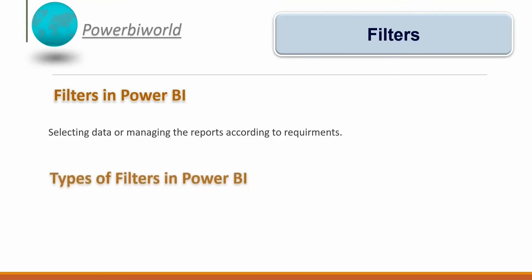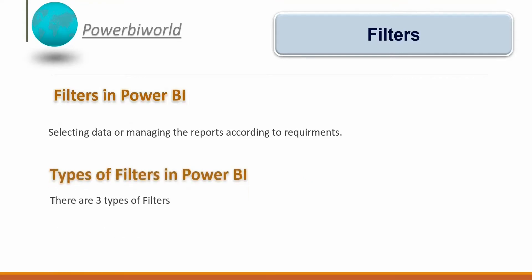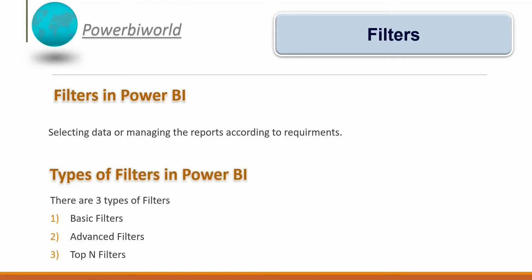There are three types of filters in Power BI. The first is the basic filter, which works like a checkbox. The second is the advanced filter, which allows you to create your own conditions to filter reports or visualizations. The third is the top/bottom filter, which allows us to select the top or bottom performers or categories based on requirements.